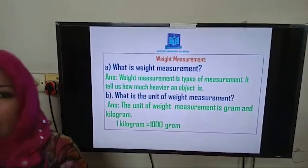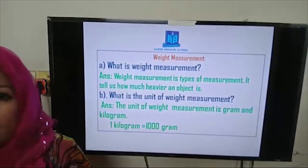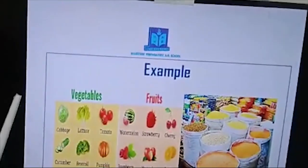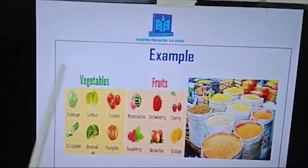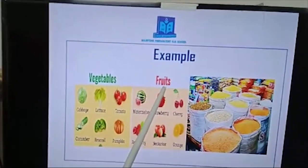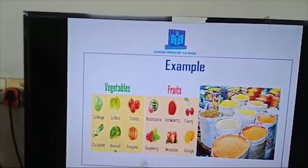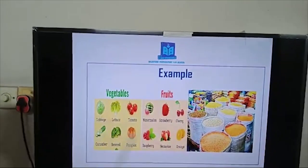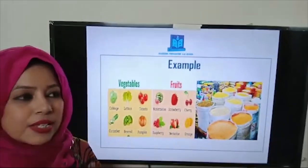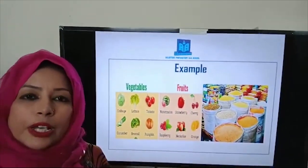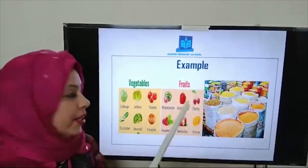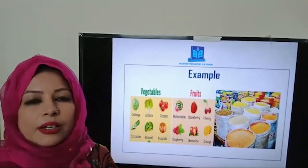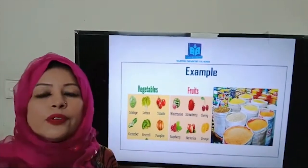Now I want to show you examples of weight measurement — which things we have to weigh. Sometimes we go to the shop and buy vegetables, fruits, rice, and dal for daily use. Whenever we want to buy these things, we have to use weight measurement. The shopkeeper will weigh the things and then give them to you. Like, sometimes you go to the shop and say: give me five kilograms of rice, two kilograms of dal. We have to express it this way.